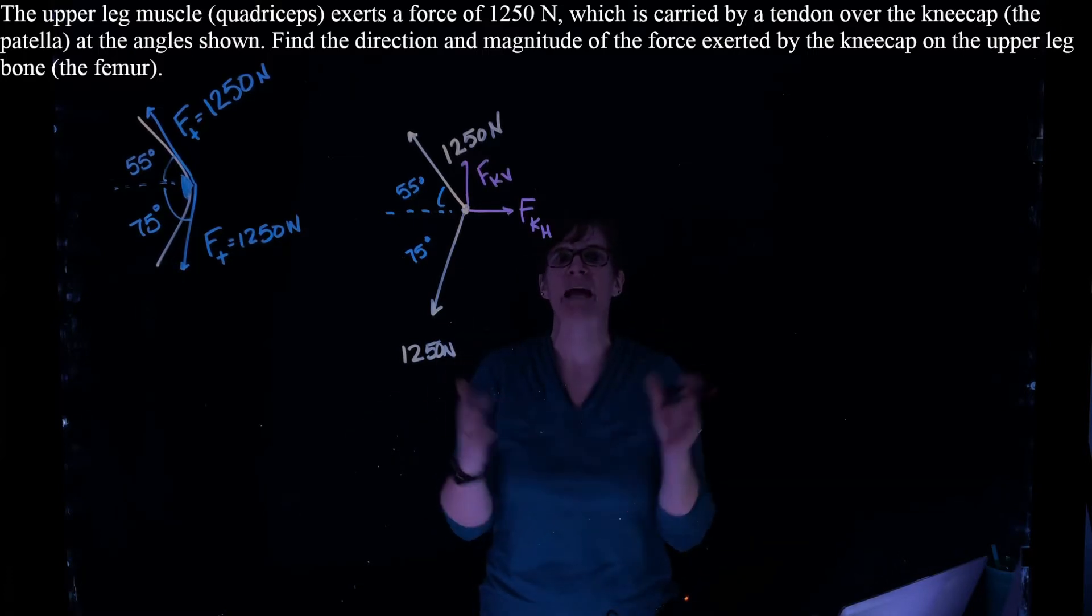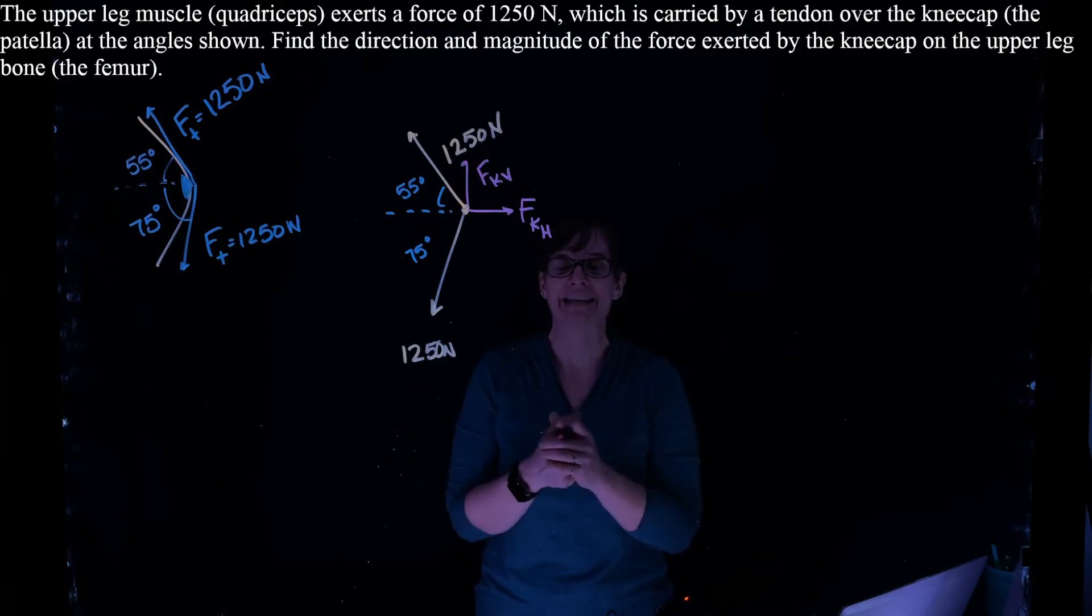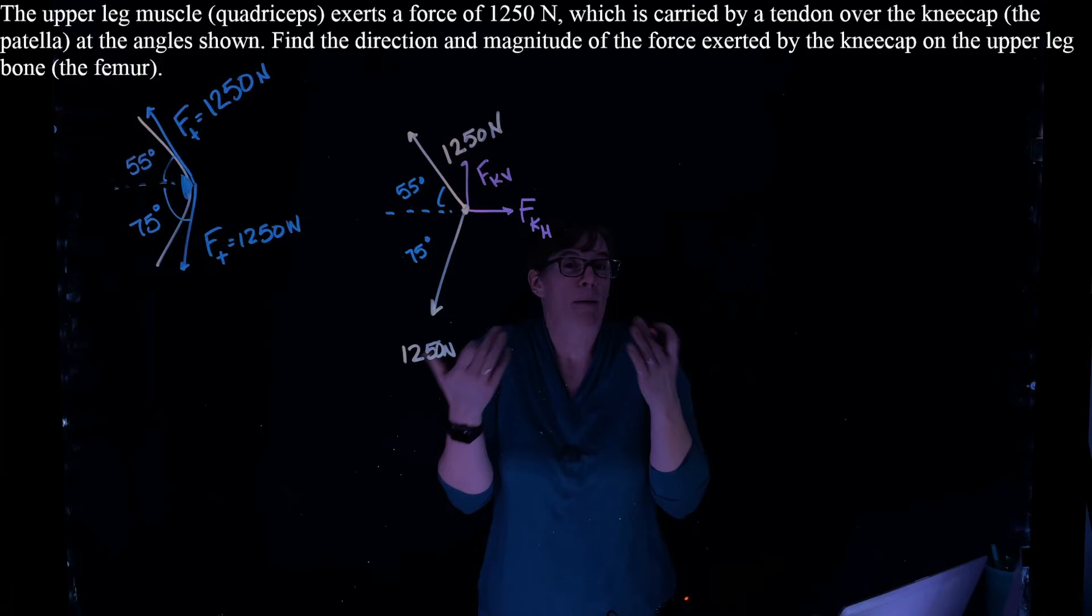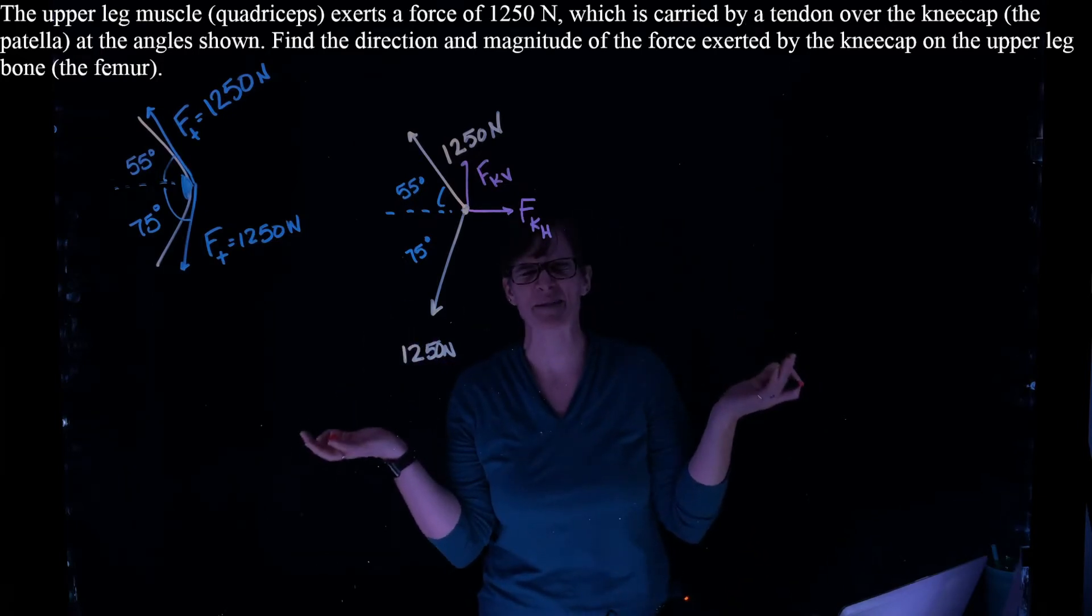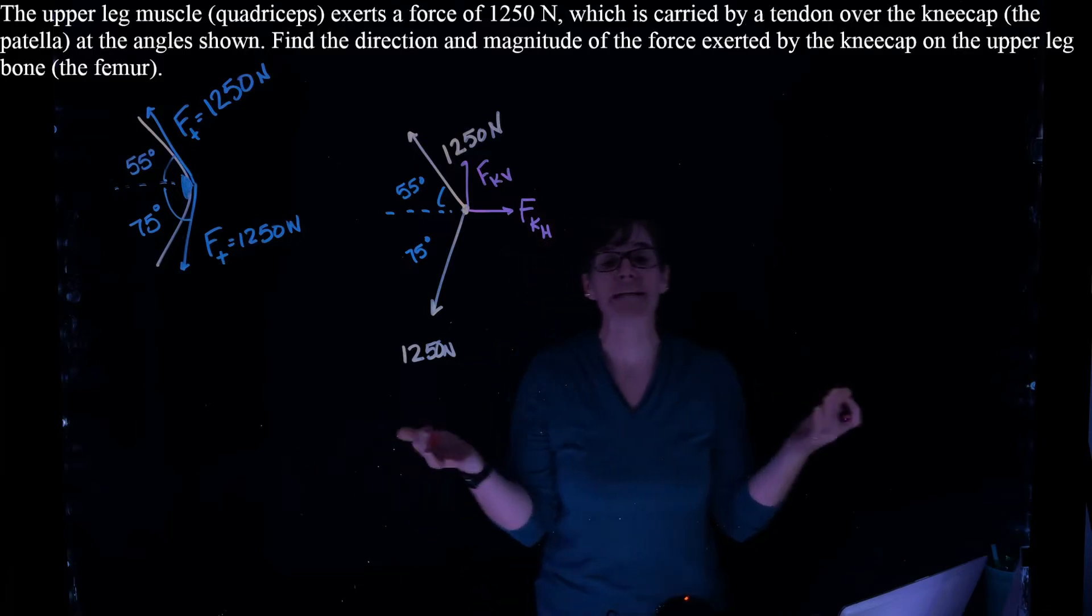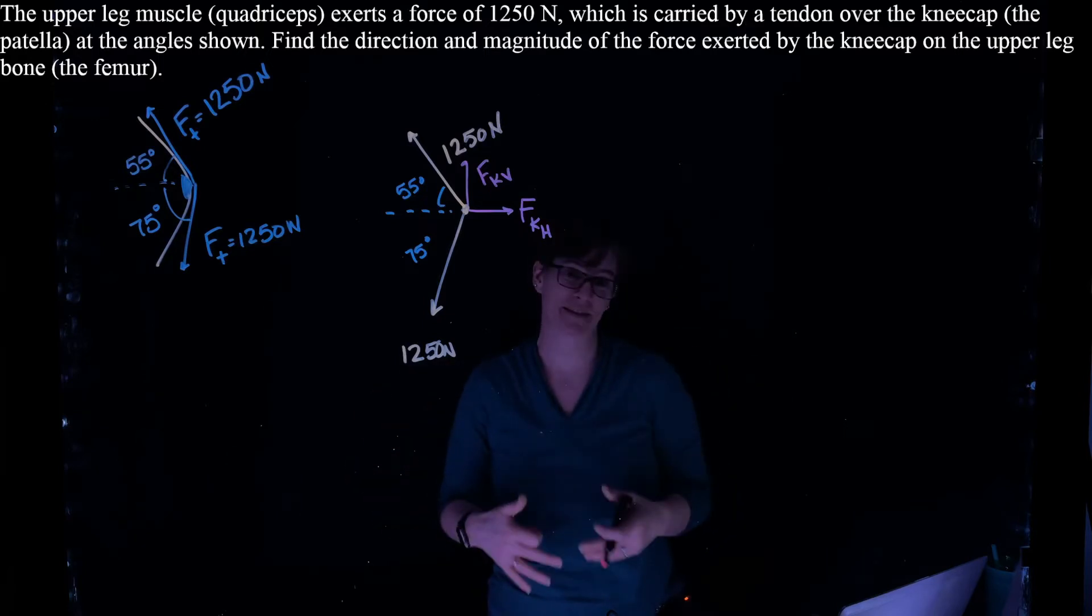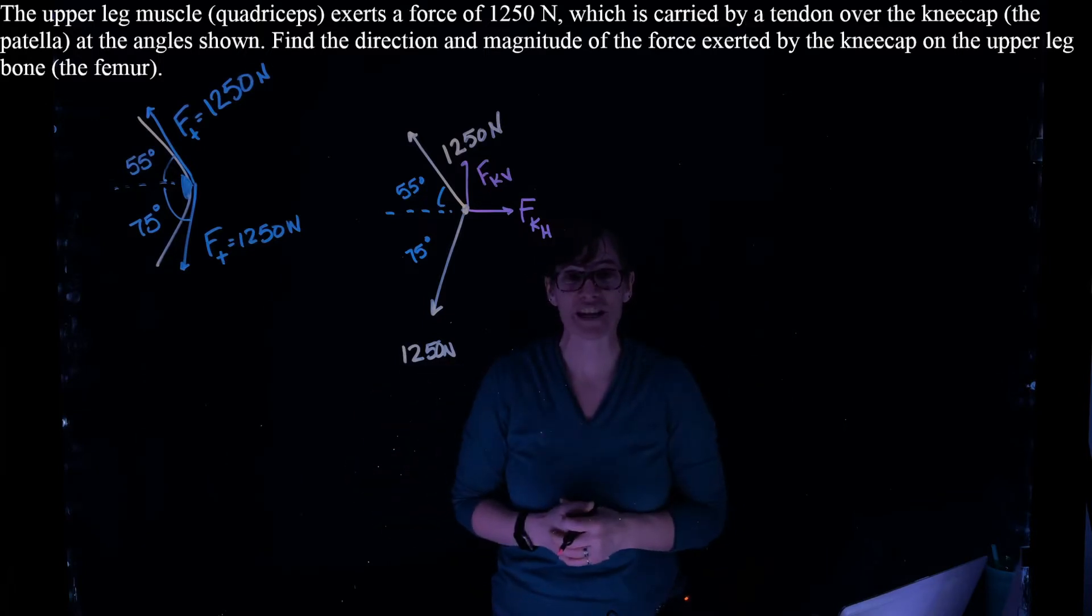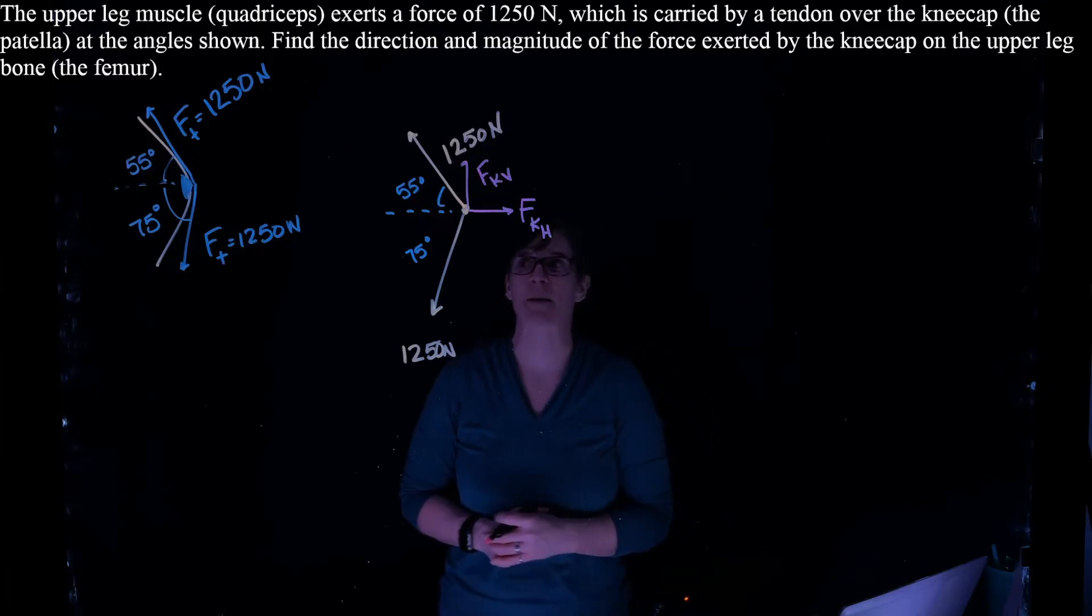Now, am I 100% sure it's to the right and up? Not 100%. I think it's a pretty good guess in this case, but not 100%, but that's okay because the physics will tell me. If I get it wrong, it's going to give me the opposite direction, in which case I will know it'll give me a negative, which tells me I chose wrong. I chose in the opposite direction.